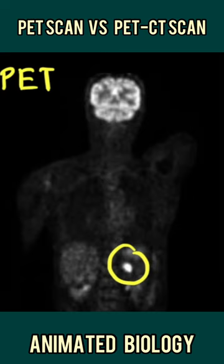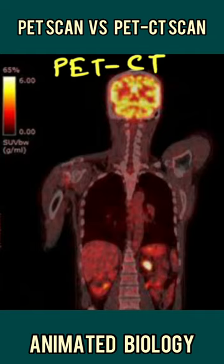To solve this problem, scientists have come out with something known as a PET CT scan, where they merge a CT scan and a PET image. This way you can clearly get the anatomical details as well as the tumor location. You get to identify the tumor as well as the exact anatomical location of the tumor.